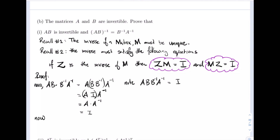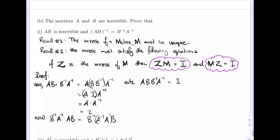So AB times B inverse A inverse equals I. Now we examine B inverse A inverse times AB. This is equal to B inverse times A inverse times A times B. Here A inverse times A gives us the identity, so we have B inverse times I times B, which leaves B inverse times B, and that is also equal to I.